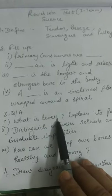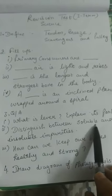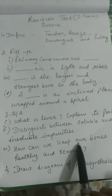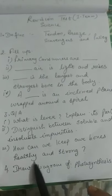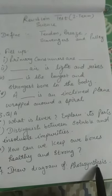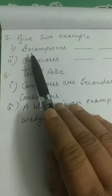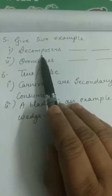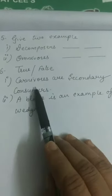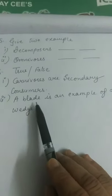Answer questions: First — what is a lever? Explain its parts. Second — distinguish between soluble and insoluble impurities. Third — how can we keep our bones healthy and strong? Fourth — draw a diagram of photosynthesis. Fifth — give two examples each of: decomposers and omnivores.